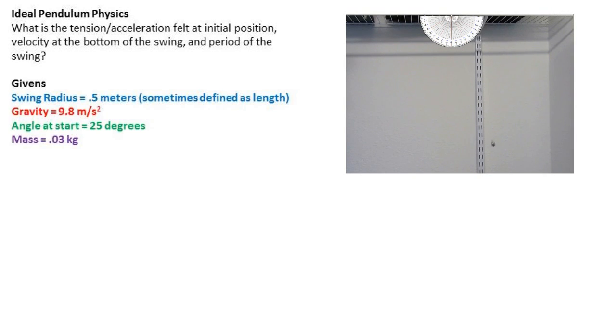So let's first begin by going over what the givens are. We have the swing radius of 0.5 meters. This is sometimes referred to as the length. We have gravity of 9.8 meters per second squared. We have the starting angle of 25 degrees, and finally, a mass of the fishing weight of about 0.03 kilograms.